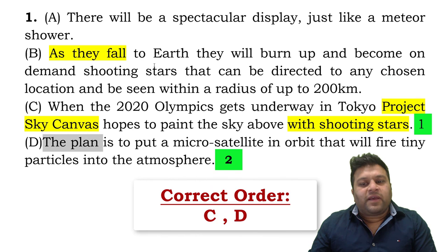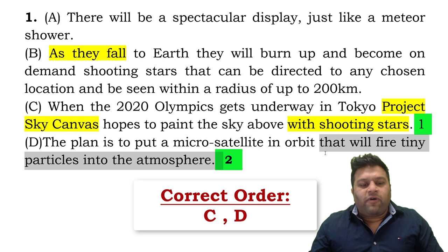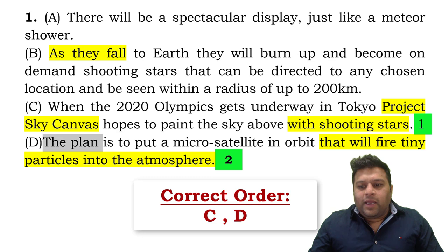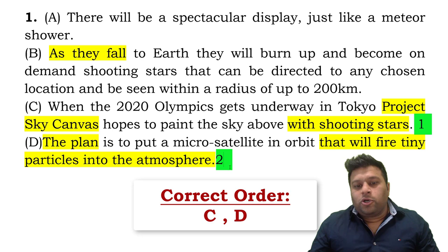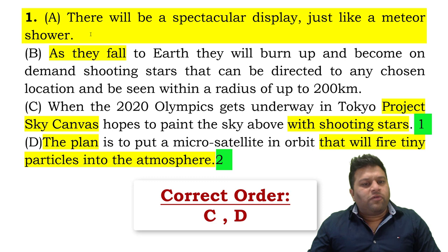The topic is Project Sky Canvas, which hopes to paint the sky above with shooting stars. We have to elaborate on it first. So the second sentence is not B — it is actually D: 'the plan is to put a micro satellite in orbit that will fire tiny particles into the atmosphere, which will look like shooting stars.' That is the biggest mistake students make — marking B as the second sentence because of 'therefore.'